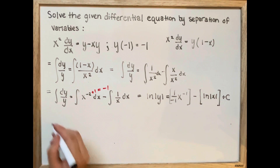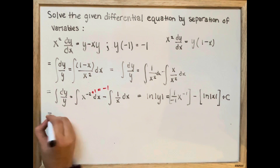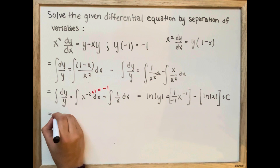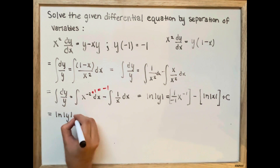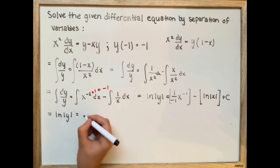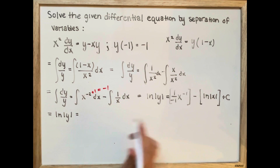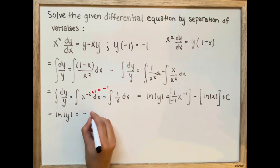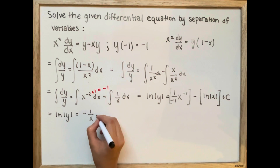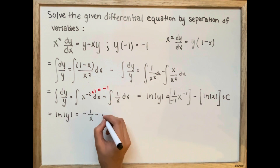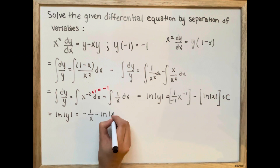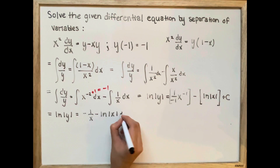Rewriting this in simplest form: we're going to have negative 1 over x minus ln of x plus c.